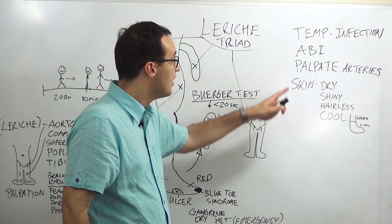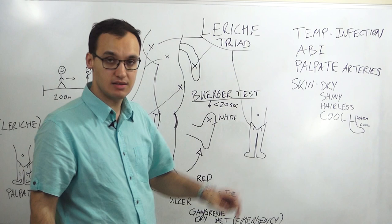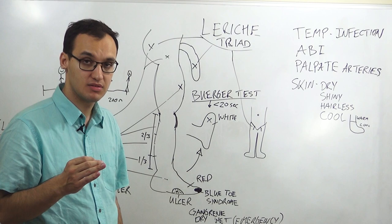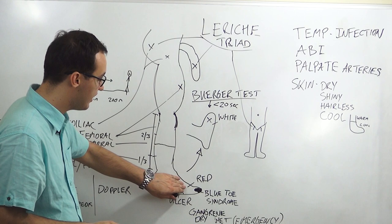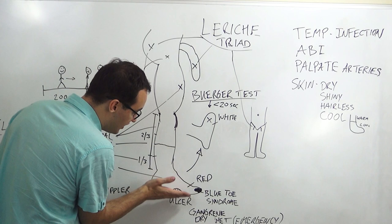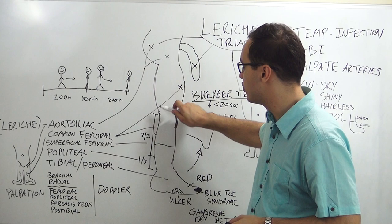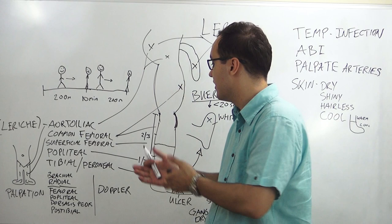Examine the skin of the legs: it appears shiny and hairless, and on palpation it feels dry and very cool. A temperature demarcation line can help localize the affected artery — for example, cool from a certain point downward suggests involvement from that level. In the upper two-thirds area, this might implicate the superficial femoral artery, though this is an estimate requiring further investigation.